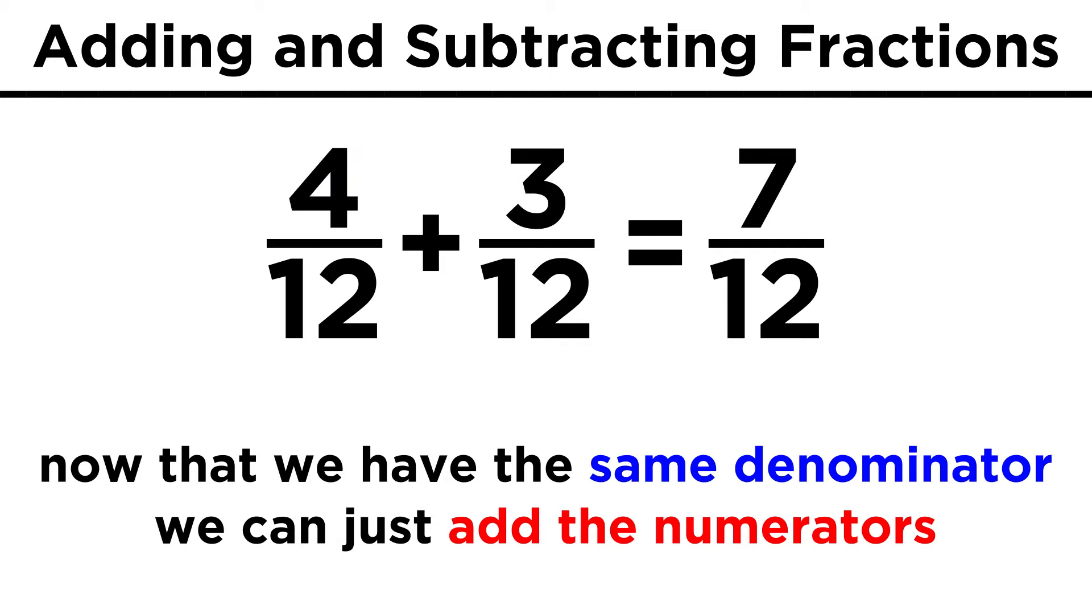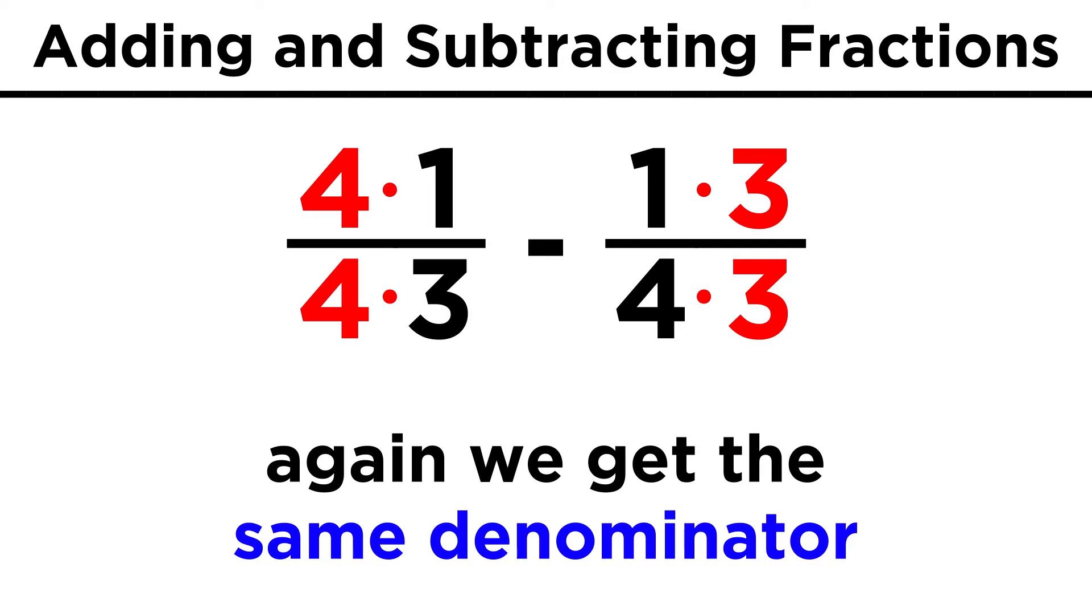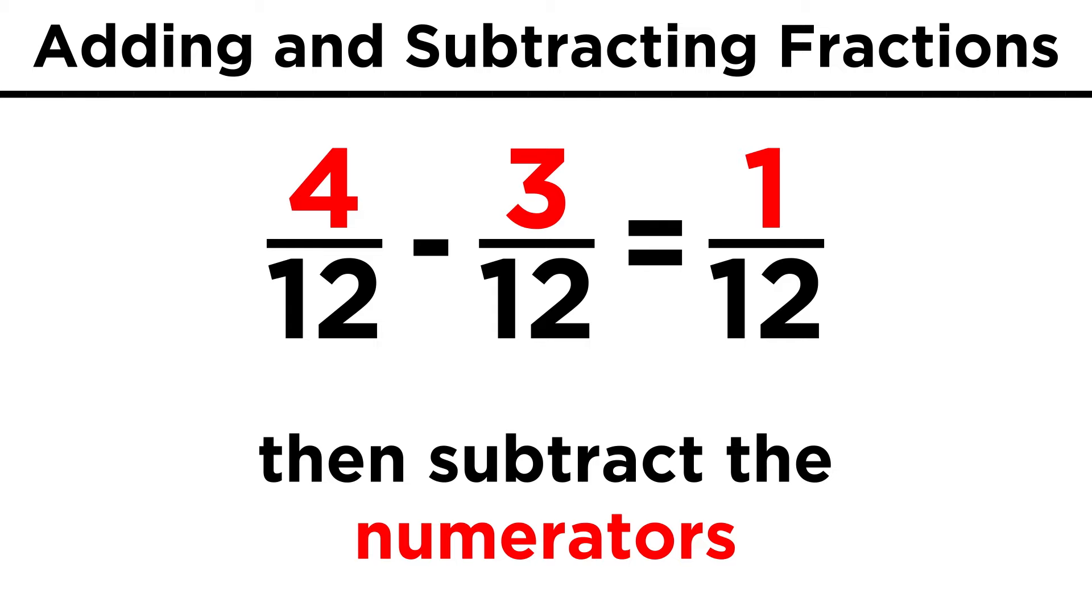For subtraction, it's essentially the same thing. What if we had one third minus one fourth? Then we would just change that to be four twelfths minus three twelfths. We just do four minus three, and we are left with one twelfth.